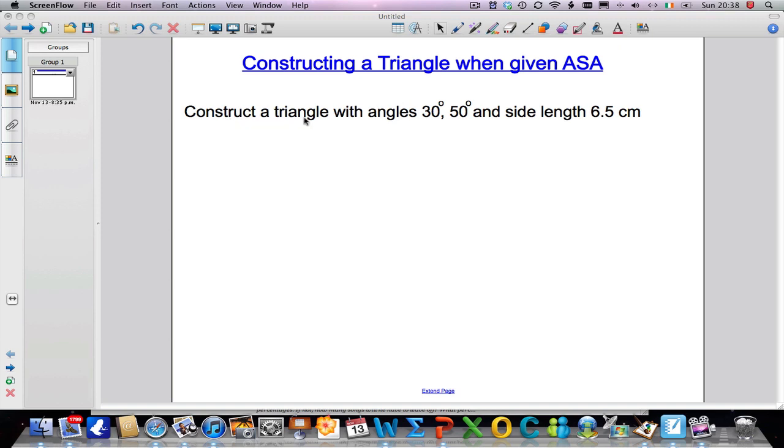In this question I want to construct a triangle with angles 30 degrees, 50 degrees and a side of length 6.5 cm.